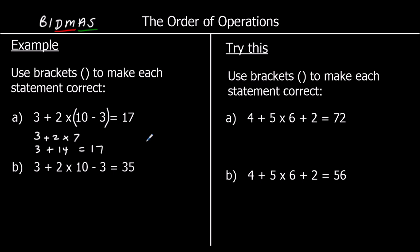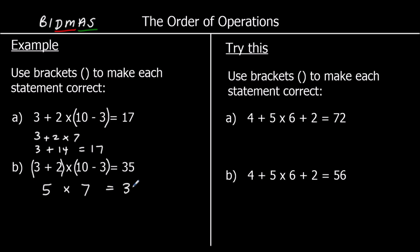For the second one, we already tried brackets around 3 plus 2, and that gave us 47 — wait, we tried brackets around 10 minus 3, which gave us 17. So where else could we put the brackets? Well, we could actually put them around both. If there are brackets around both, we do both first: 3 plus 2 is 5, times (10 minus 3) which is 7, and 5 times 7 is 35.